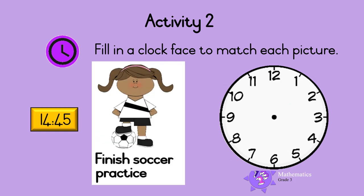Last one. At quarter to three in the afternoon, you finished soccer practice. Let's show this time on the analog clock. The hour hand should point between two and three, because it is almost three o'clock in the afternoon. The minute hand should point to nine to show 45 minutes. That's it — well done! Make sure you can read the time. See you next time!